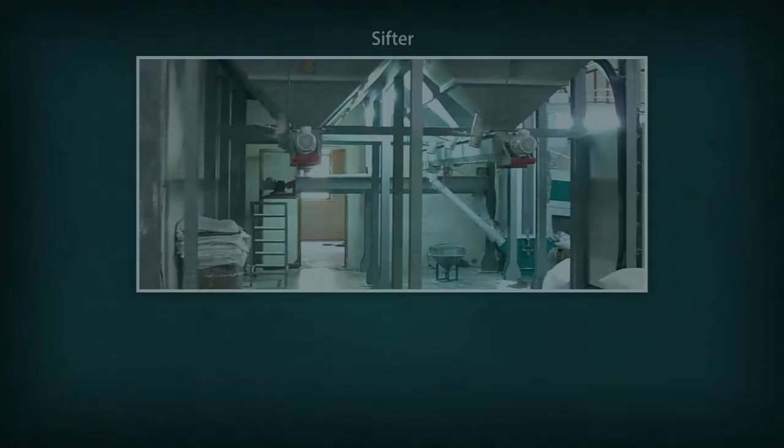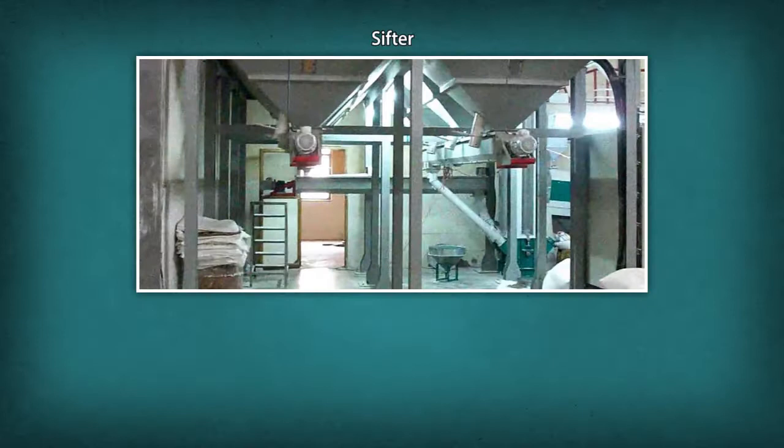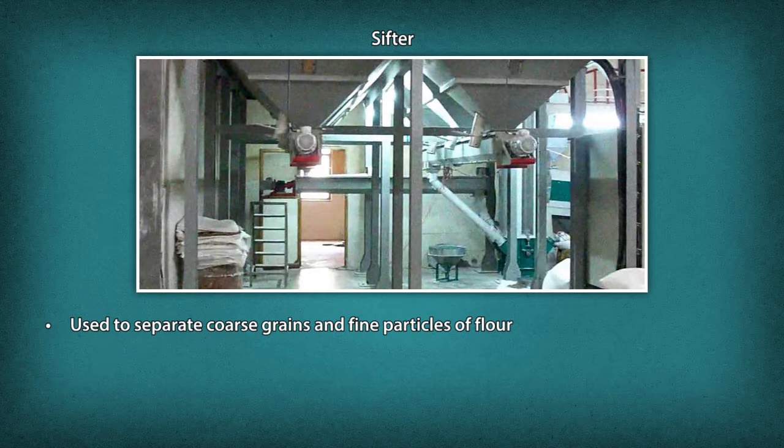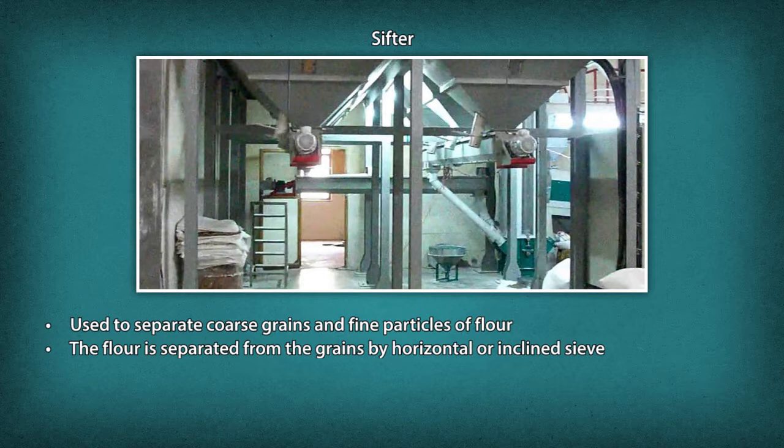Tools and Equipment Used in the Baking Process. Sifter: It is used to separate coarse grains and fine particles of flour using flat sieves. The main parts of a sifting machine are the drive mechanism and the set of sieves. The flour is separated from the grains by horizontal or inclined sieve and sifted into three to six groups as per particle sizes.